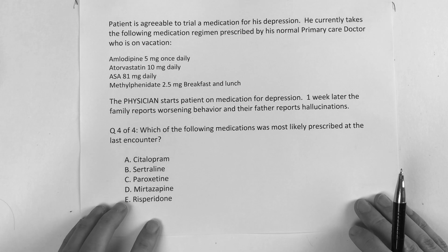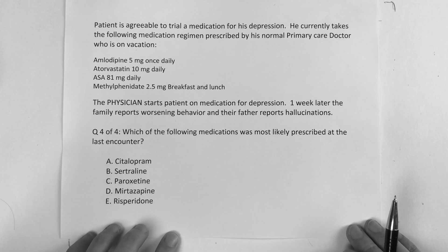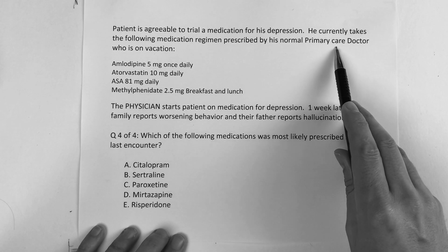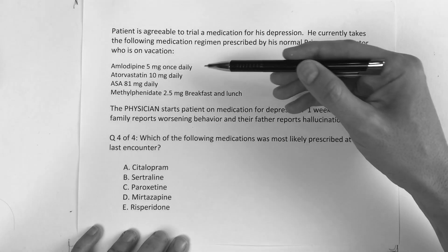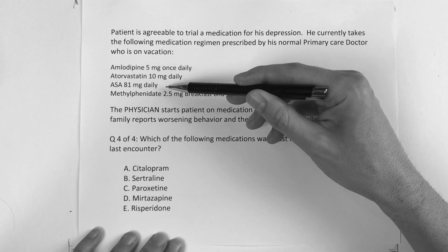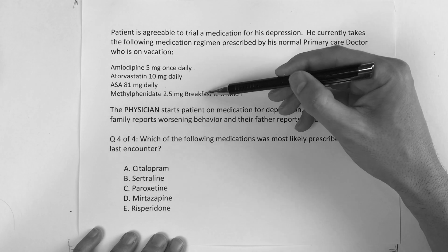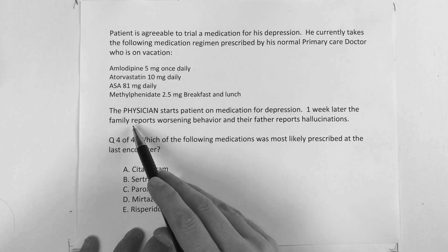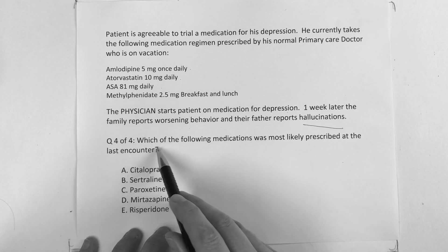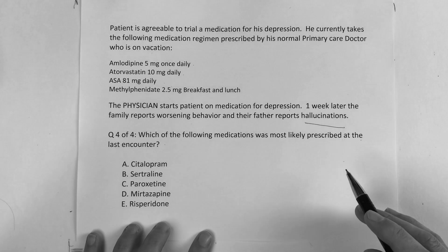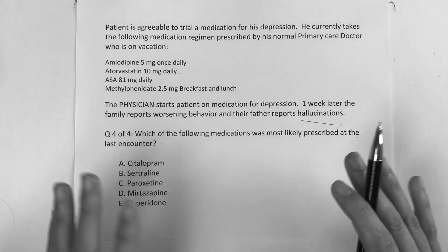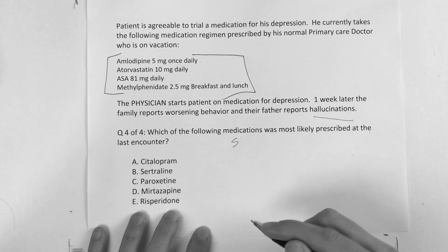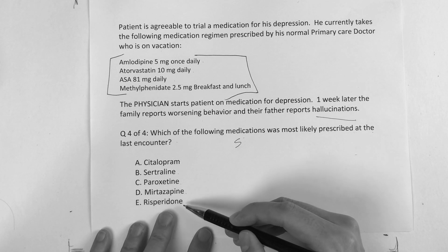And then the last question — see if you can get it by yourself first, and if you get this right I'll be very impressed. The patient is agreeable to trialing a medication for his depression. He currently takes the following medications prescribed by his regular primary care doctor who is currently on vacation: amlodipine 5 mg once daily, atorvastatin 10 mg once daily, aspirin 81 mg daily, and methylphenidate 2.5 mg for breakfast and lunch. The physician starts the patient on a medication for depression. One week later, the family reports worsening behavior and their father reports hallucinations. Which of the following medications was most likely prescribed at the last encounter? The answer choices are: citalopram, sertraline, paroxetine, mirtazapine, or risperidone.